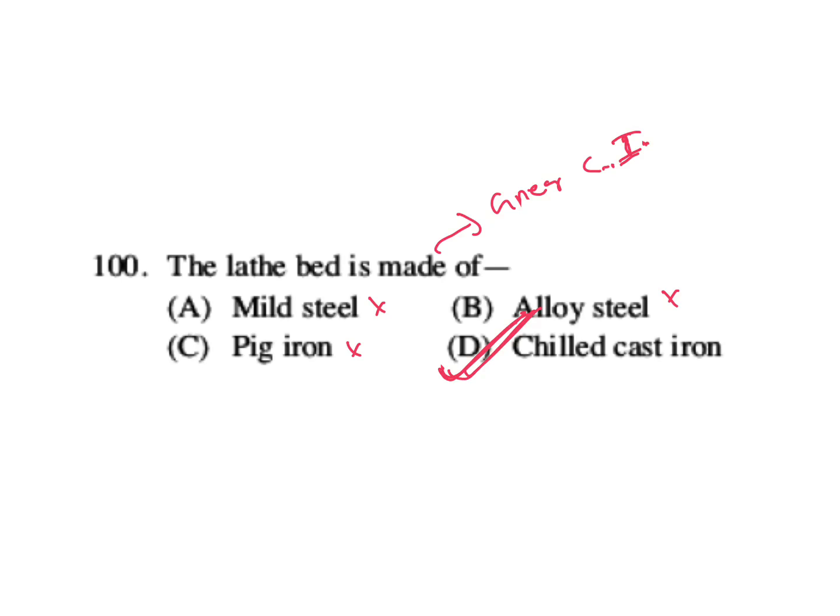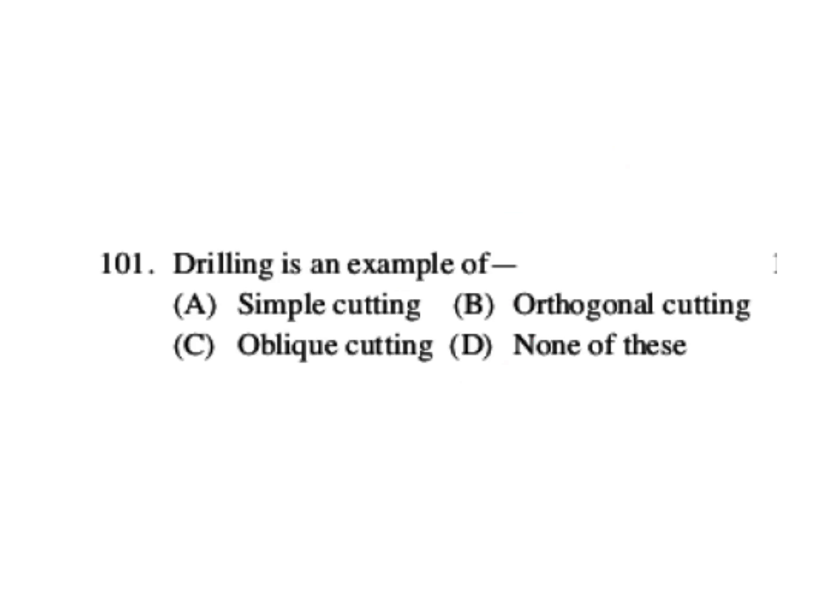Question is: drilling is an example of simple cutting, orthogonal cutting, or oblique cutting. Orthogonal cutting you can call it as two-dimensional cutting, and oblique cutting we can call it as three-dimensional cutting. Drilling is an example of oblique cutting. In case of orthogonal cutting you have broaching and turning operations.